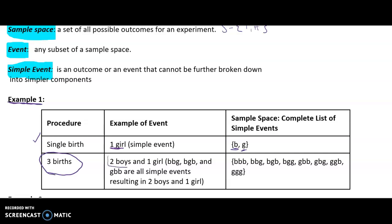Now let's look at the procedure of three births. An example of an event in three births would be two boys and a girl. This is not a simple event because there are different combinations that result in two boys and one girl: boy-boy-girl, boy-girl-boy, and girl-boy-boy. The complete sample space for three births is: boy-boy-boy, boy-boy-girl, boy-girl-boy, boy-girl-girl, girl-boy-boy, girl-boy-girl, girl-girl-boy, and girl-girl-girl — eight possible outcomes.